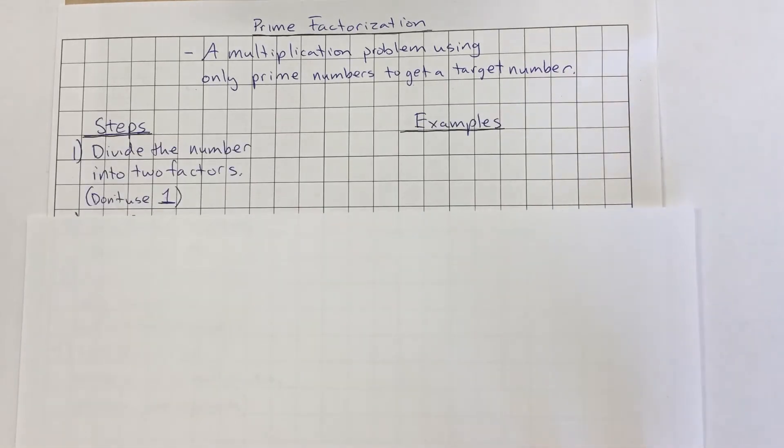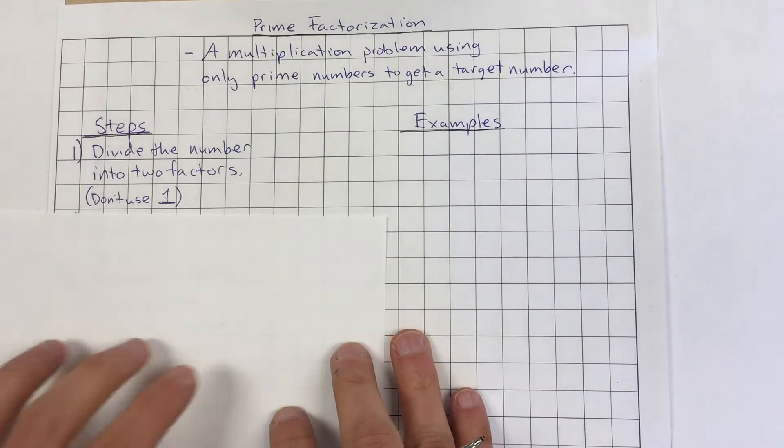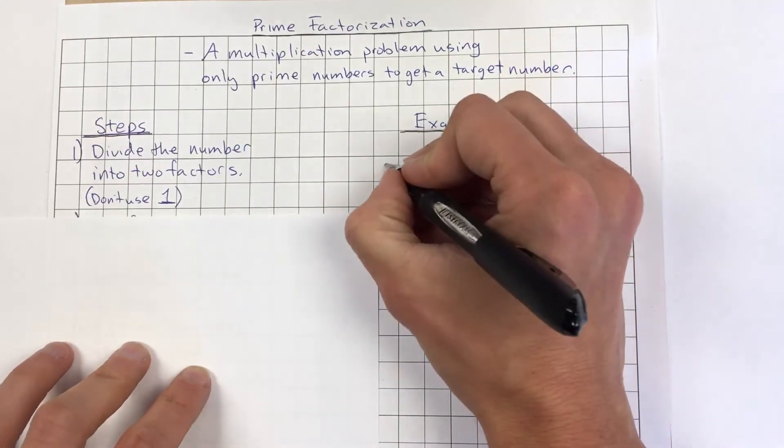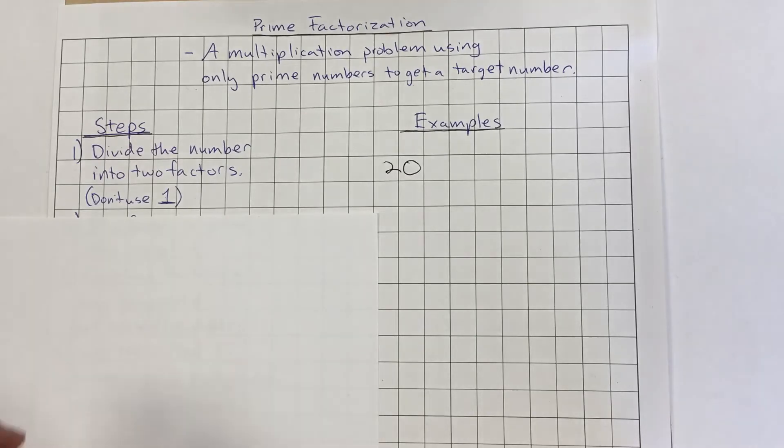And so we're going to start right here. Our first step, so let's say our number we were asked to find the prime factorization of was 20. I'm just going to write 20 right here. The first thing we're going to do is we're going to think about what can we split it into if we're going to divide it into two numbers that are factors.